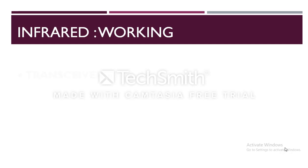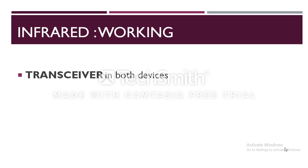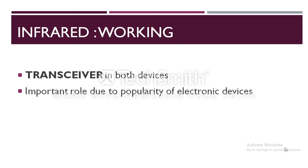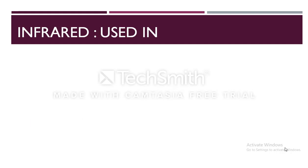Infrared communication requires a transceiver — a combination of transmitter and receiver — in both devices that communicate. Infrared communication is playing an important role in wireless data communication due to the popularity of laptop computers, personal digital assistants, digital cameras, mobile phones, pagers and other devices. But being a line-of-sight transmission, it is sensitive to fog and other atmospheric conditions. Infrared communication is used in home remote control systems.